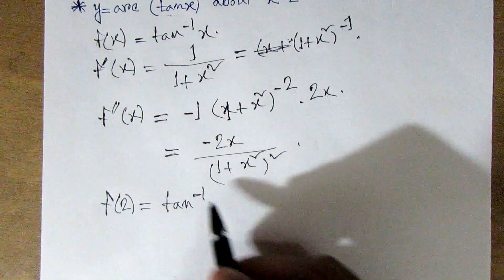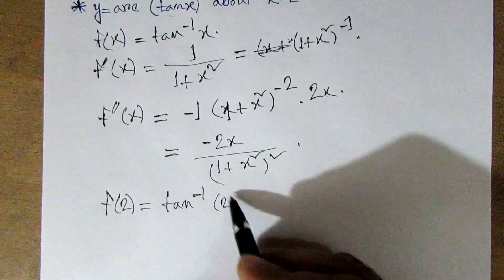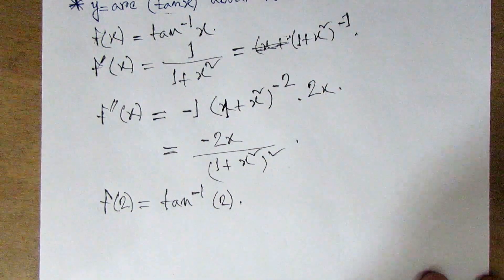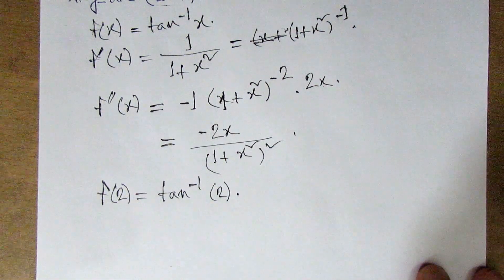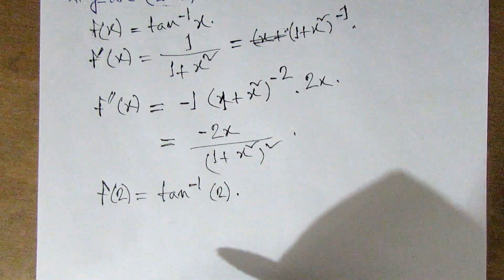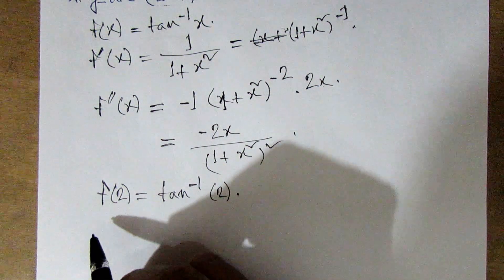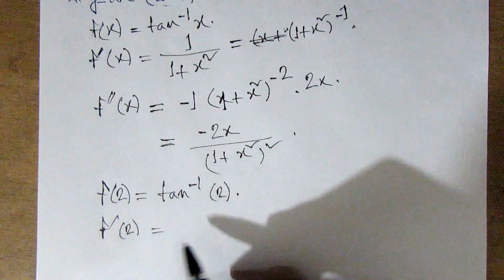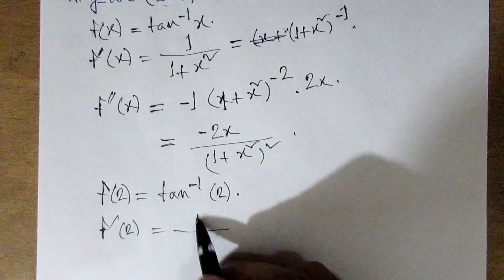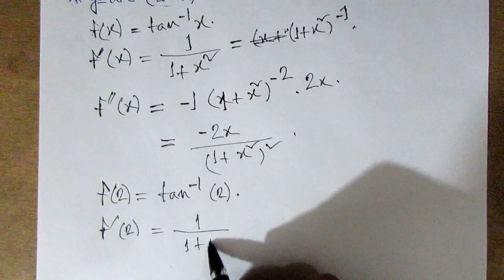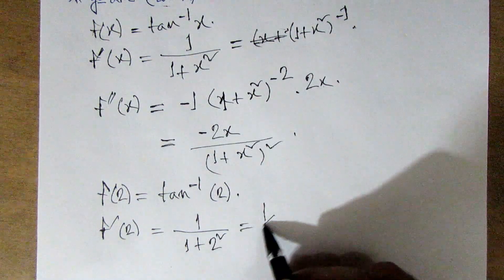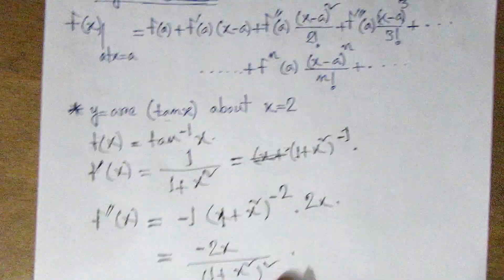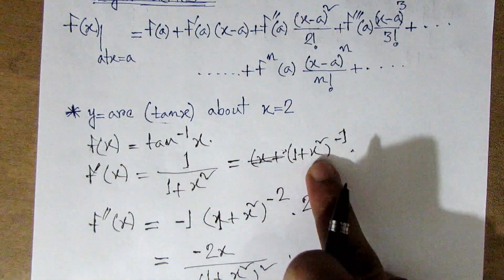So tan inverse 2 — if I have the value I will keep it here. The value will be: 1 by 5 — so this is the value at a equals 2. Evaluating f at a=2 gives us 1 by 5.